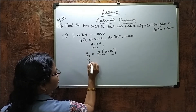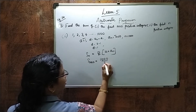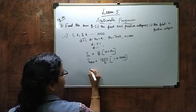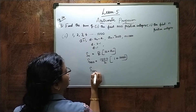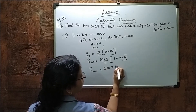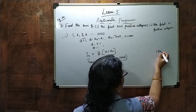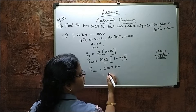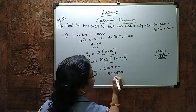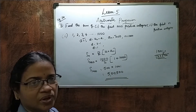So S1000 equals 1000 divided by 2, which is 500, into 1001. When you multiply 1001 into 500, you get 500500. This is the answer.